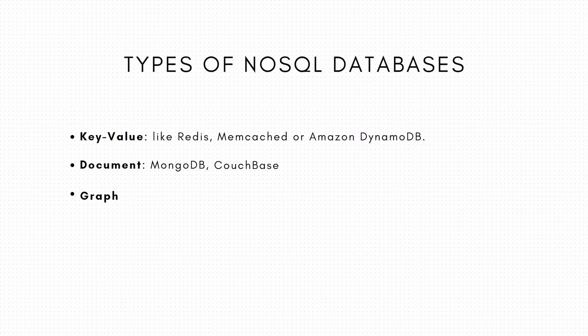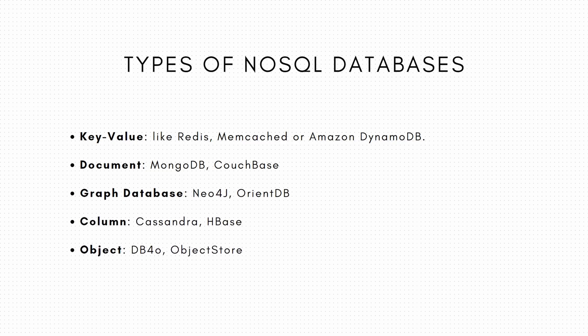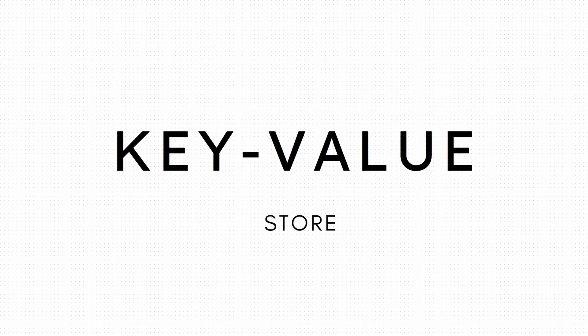People may be familiar with a document database like MongoDB, but there are many, many more NoSQL databases. The different types of NoSQL databases include key-value databases like Redis, document databases like MongoDB, graph databases like Neo4j, and column and object databases. In order to introduce NoSQL databases properly, I need to introduce a concept called the key-value store first.